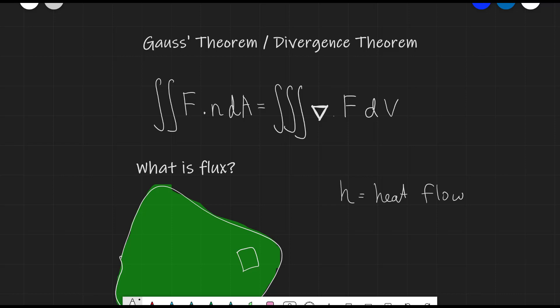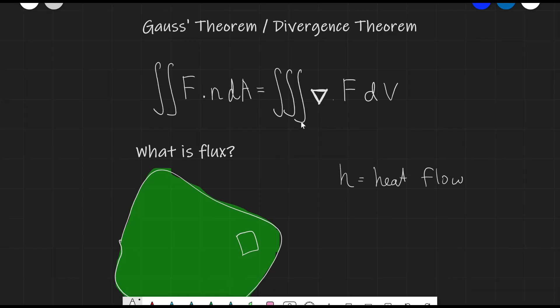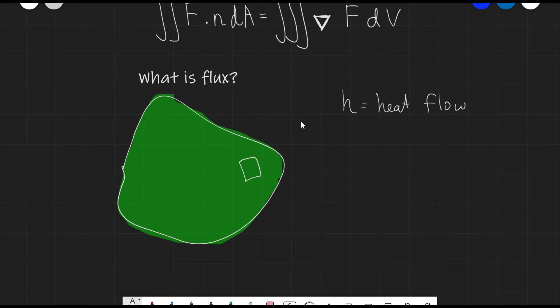Now let's move to Gauss's theorem, also known as the divergence theorem. It involves a surface integral and a volume integral, which I'm going to explain. In order to really understand the divergence theorem, we must first understand what flux actually is. Imagine that you have any surface — I've chosen this two-dimensional green surface — and imagine they have some function H which represents the heat flow out of this surface.